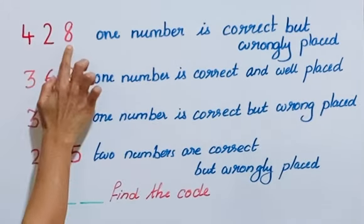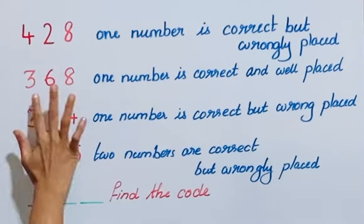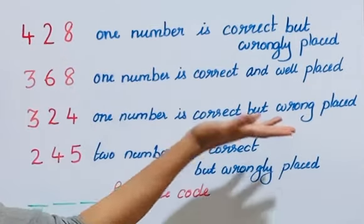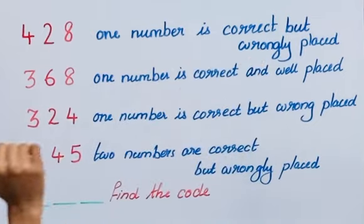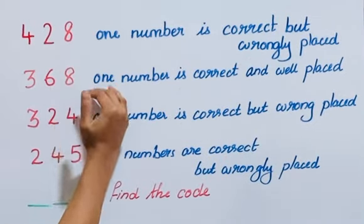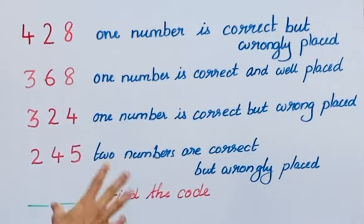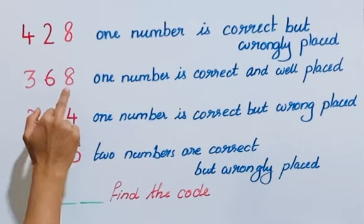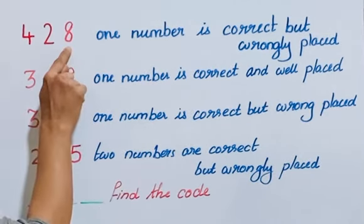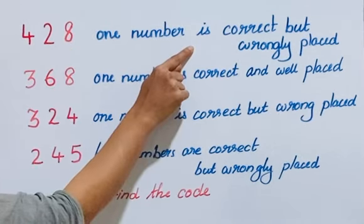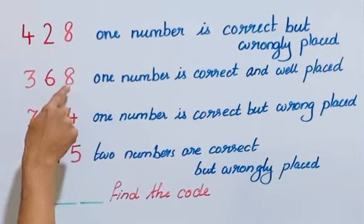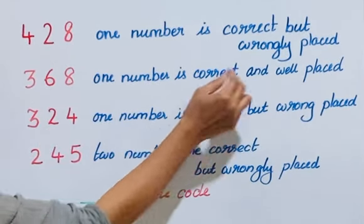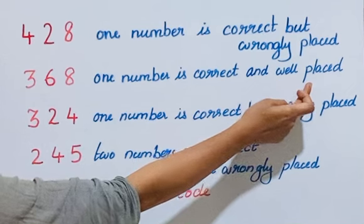Looking at clues 1 (428) and 2 (368): the correct number in the first clue is wrongly placed, and in the second clue it is well placed. We check whether the same number appears in both clues. If a number is wrongly placed in one and well placed in the other at the same position, it creates a contradiction.